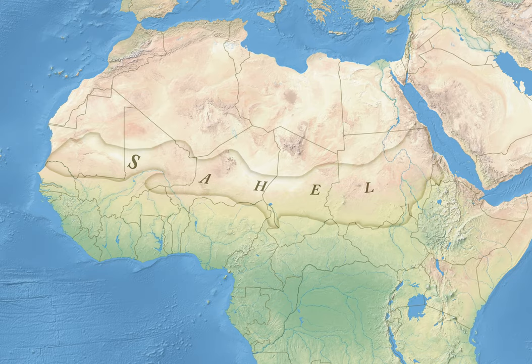The Sahel spans 5,400 kilometres from the Atlantic Ocean in the west to the Red Sea in the east, in a belt that varies from several hundred to a thousand kilometres (c. 600 miles) in width, covering an area of 3,053,200 square kilometres (1,178,850 square miles). It is a transitional ecoregion of semi-arid grasslands, savannas, steppes, and thorn shrublands lying between the wooded Sudanian savannah to the south and the Sahara to the north. The topography is mainly flat, with most of the region lying between 200 and 400 metres in elevation. Annual rainfall varies from around 100 to 200 millimetres in the north to around 600 millimetres in the south.